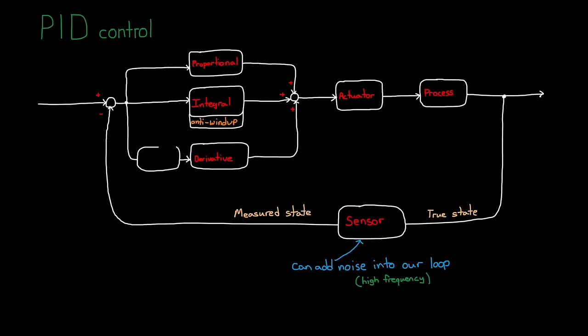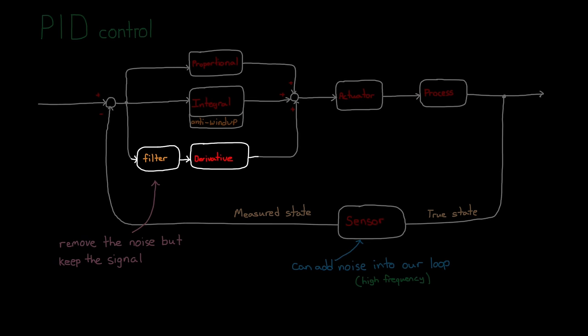All right, let's add our filter to the derivative path and start to talk about what this looks like. Ideally, you want a filter that can remove all of the noise and perfectly pass through all of the signal. But this isn't something that can be achieved in practice.